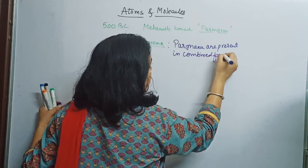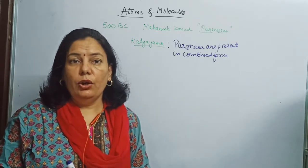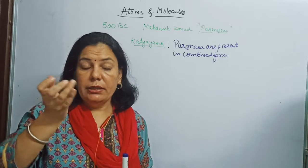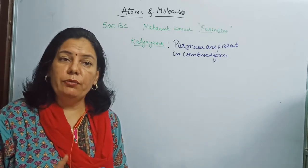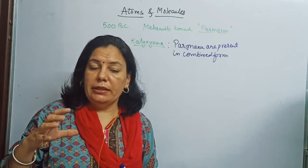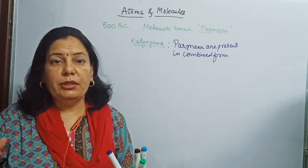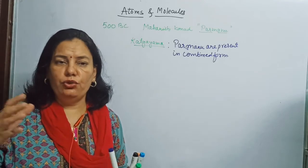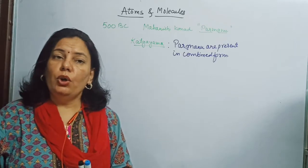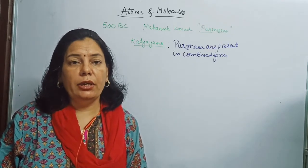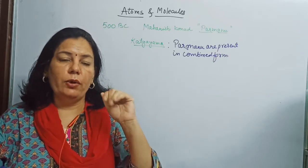Now this is our talk about the Indian scientist. At the same time, in parallel, Greek and various world scientists were also studying matter — what is the nature of matter, what is the basic concept of matter, what happens when two matters react with each other. So in the same era, around 500 BC, there were two scientists: Leucippus and Democritus — both Greek scientists.